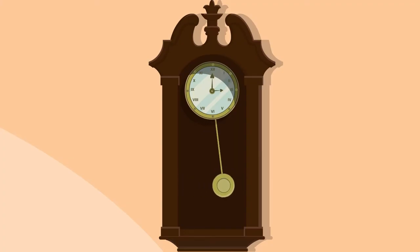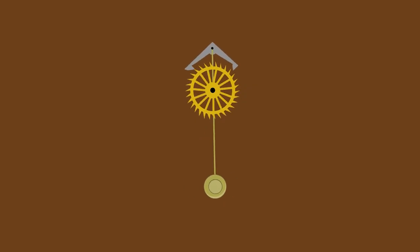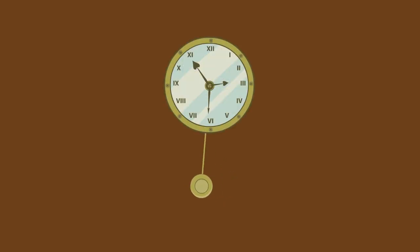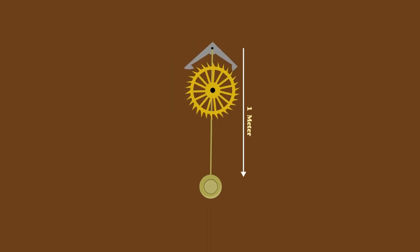Pendulum clocks are the best example of the torsional pendulum that works by torsional oscillation. The torsional pendulums are used to mechanically calculate the time, depending upon the length and weight suspended in the torsion spring.